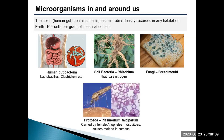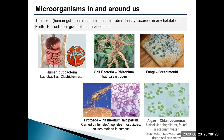Parasitic protozoan Plasmodium falciparum is unicellular and causes malaria in humans, transmitted through the bite of a female Anopheles mosquito. Microalgae are unicellular microorganisms living in saline or freshwater environments and capable of doing photosynthesis. One of them is the unicellular flagellate called Chlamydomonas.